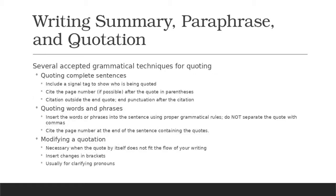There are several accepted techniques for quoting. First, when quoting complete sentences, include a signal tag to show who is being quoted — that's important, we want to know who the speaker is. When quoting articles, do not credit the title of the article; credit the name of the author. Articles do not write themselves, so proper credit goes to the author, not the article.